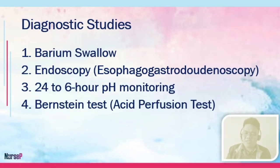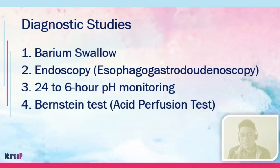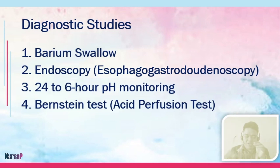We have the following diagnostic tests for our patient. One is the barium swallow — the patient swallows barium for visualization of the esophagus or the upper gastrointestinal system. Then we have EGD, or esophagogastroduodenoscopy, which aids in visualization of the esophagus, stomach, and duodenum. We also have 24 to 36-hour pH monitoring to monitor spikes of the condition. Then there is the Bernstein test — an acid perfusion test — where a nasogastric tube is inserted and mild hydrochloric acid, such as vinegar mixed with saline solution, is administered. Within 30 minutes, if there are signs of discomfort, you would suspect GERD.